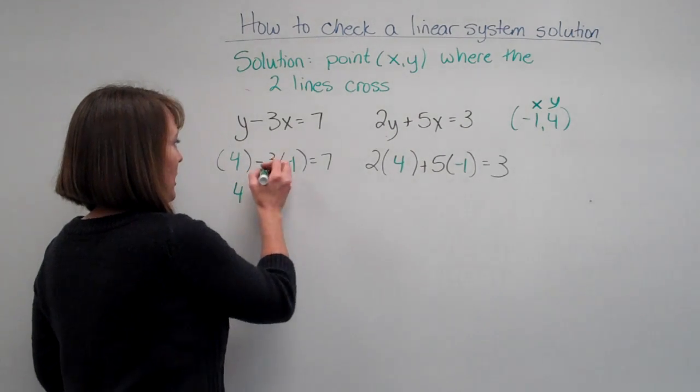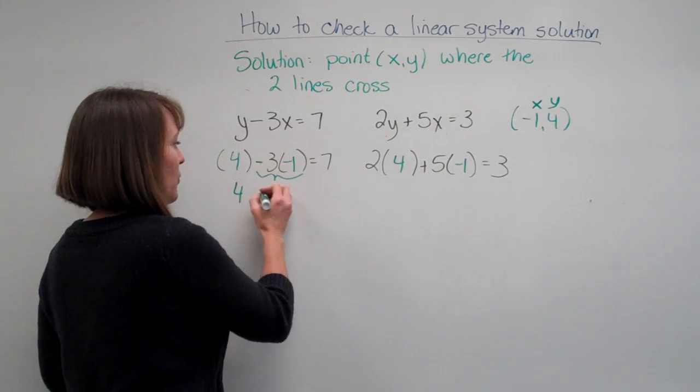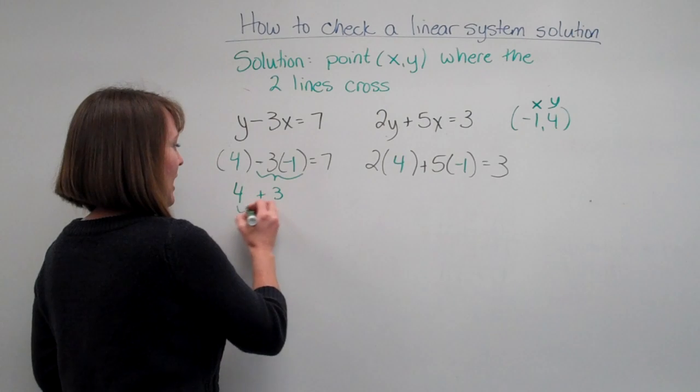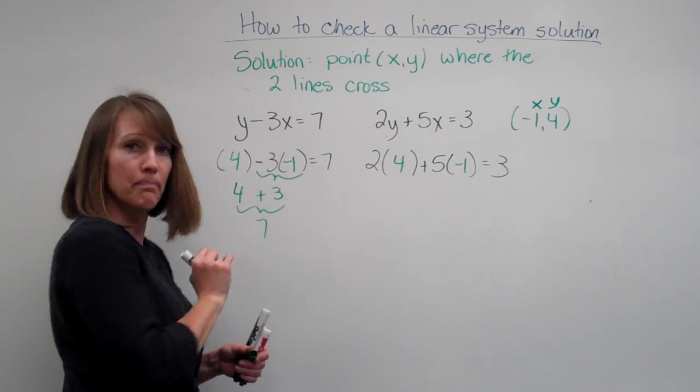This would be 4. Negative 3 times negative 1 is positive 3. And that gives me 7. Yep, true statement.